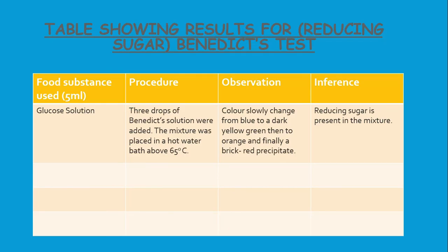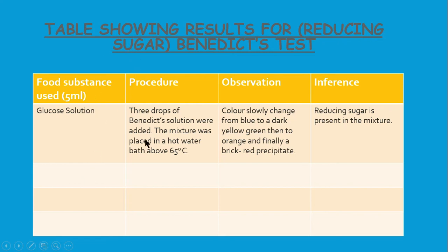This is the test for reducing sugar, or Benedict's test. This is the only food test lab required by CSEC to be recorded in a table. Remember, a table should have four sides. We should not repeat the unit in the cells. It should have a header row and a header column, and your table should have a descriptive title. Where there are blank spaces in the table that will not be used, a dash should be used. You're going to fill out the rest of the information from the experiment, looking at the other food substances and the procedure, observation, and inference.